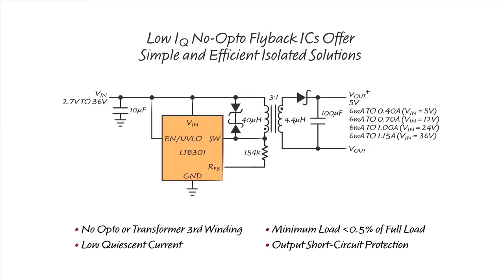Our Low IQ No Opto Flyback ICs eliminate opto-isolators or transformer third windings by sampling the isolated output voltage directly from the primary side switch node waveform, thereby simplifying the isolated power supply solutions. Internal compensation and internal soft start further simplify application solutions and reduce the external component count.